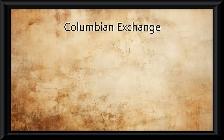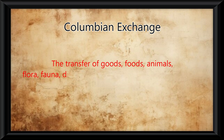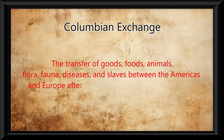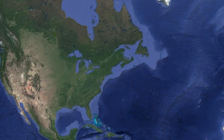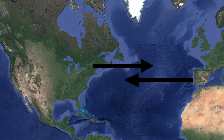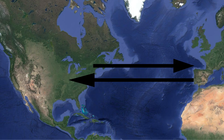By definition, the Columbian Exchange means the transfer of goods, foods, animals, flora, fauna, diseases, and slaves between the Americas and Europe after European contact in the Americas. Essentially what happened is when European countries came to America, various things got transferred from one continent to the other.